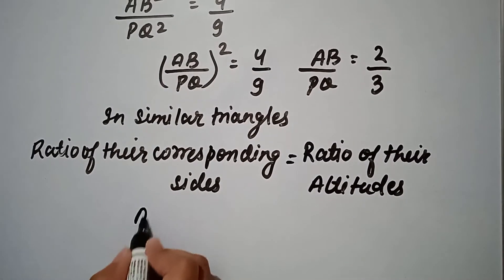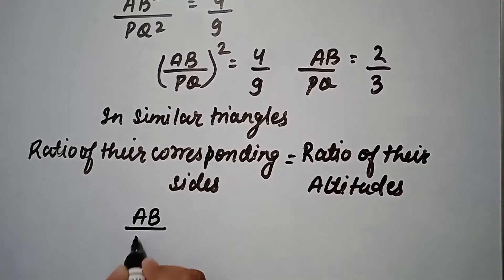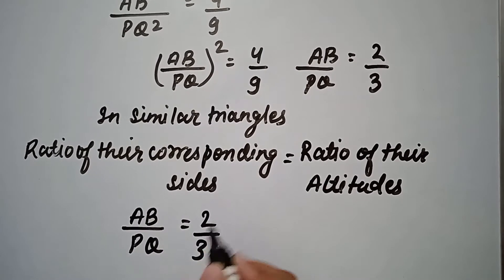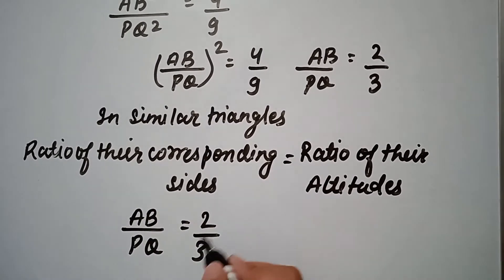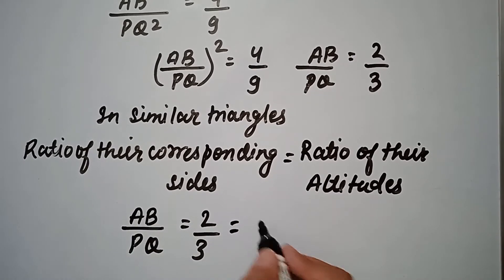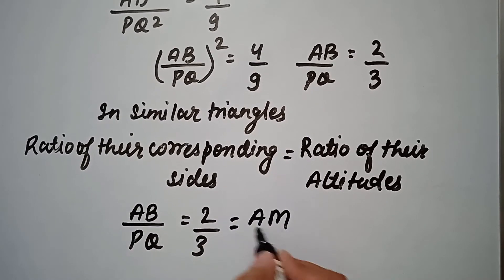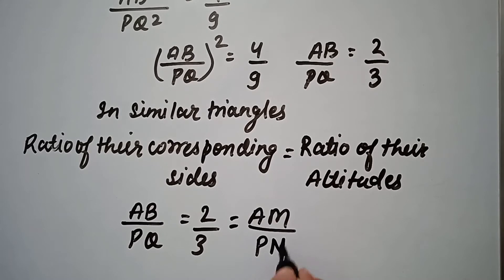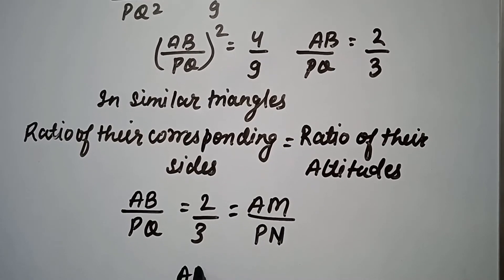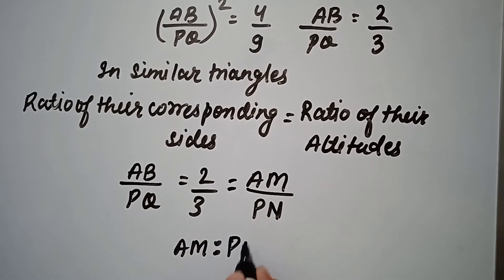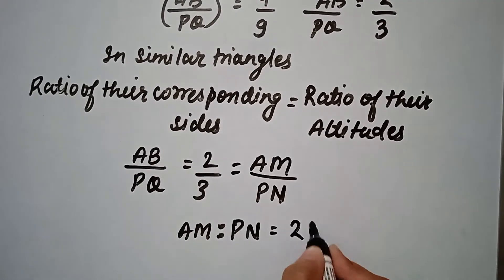So AB upon PQ value we just found is 2 upon 3, and by this property, AB upon PQ value will be equal to AM upon PN. Therefore, AM ratio PN value will be 2 ratio 3.